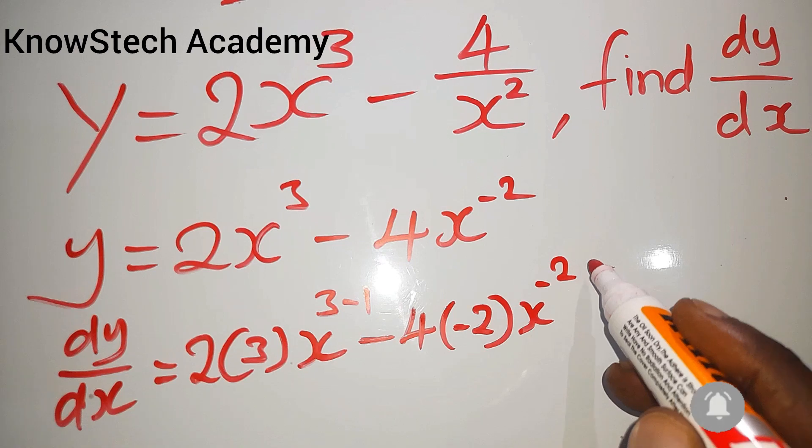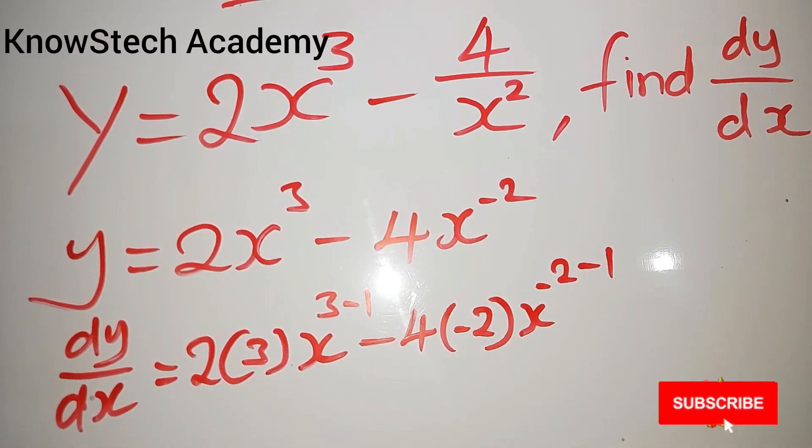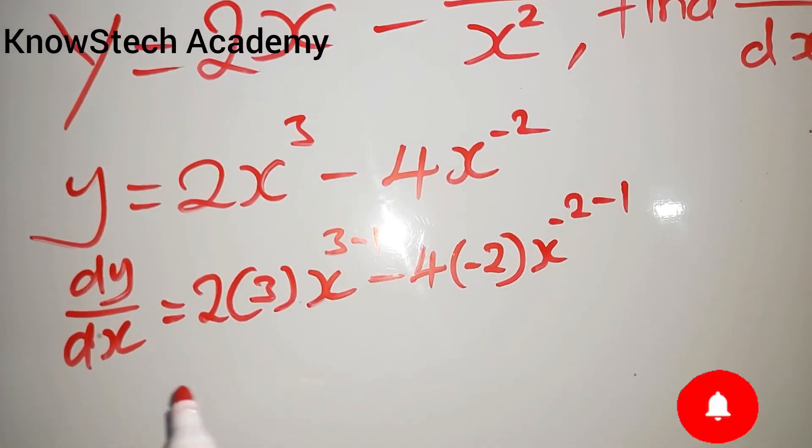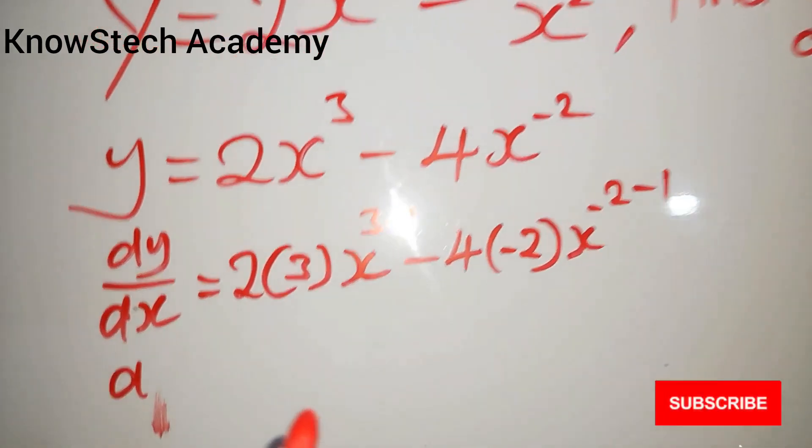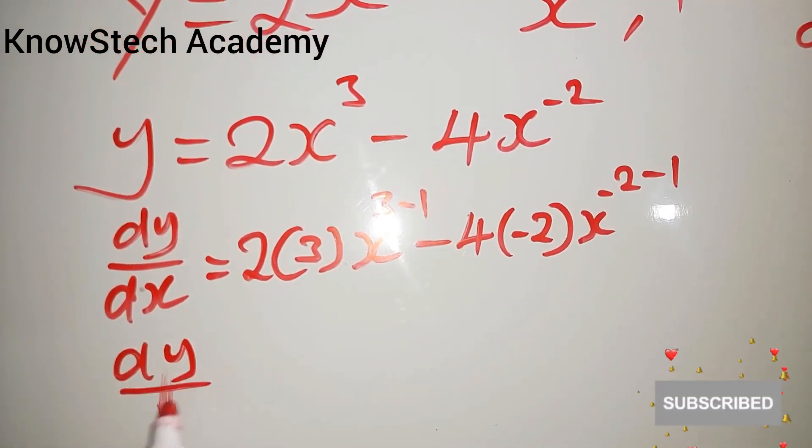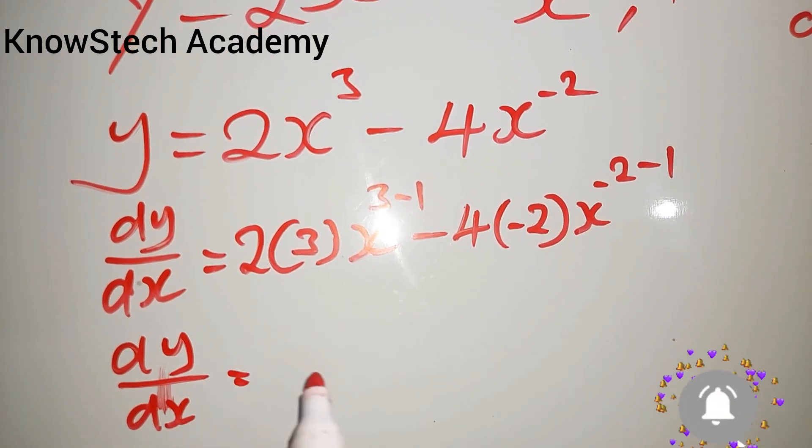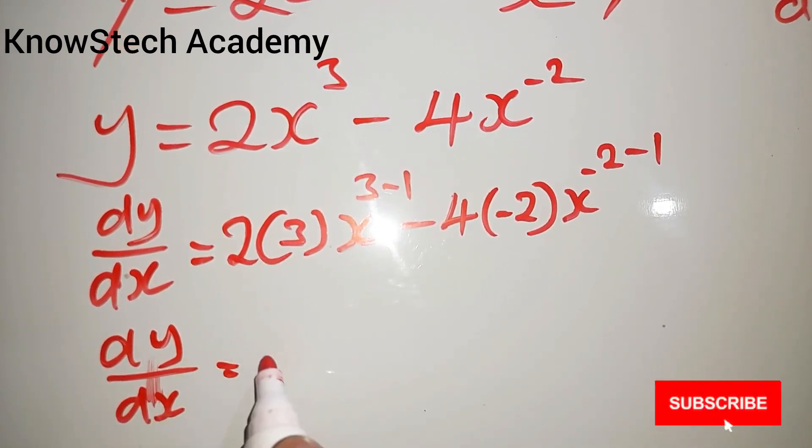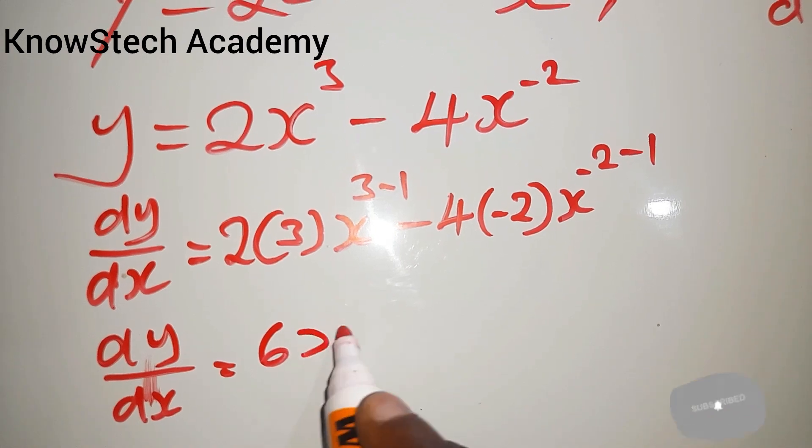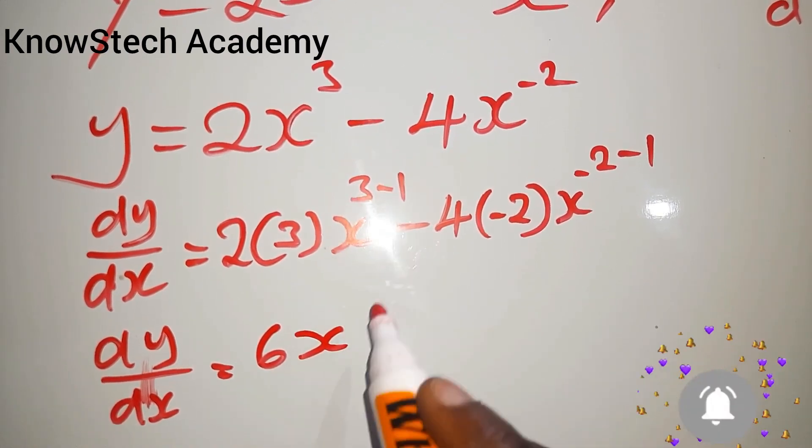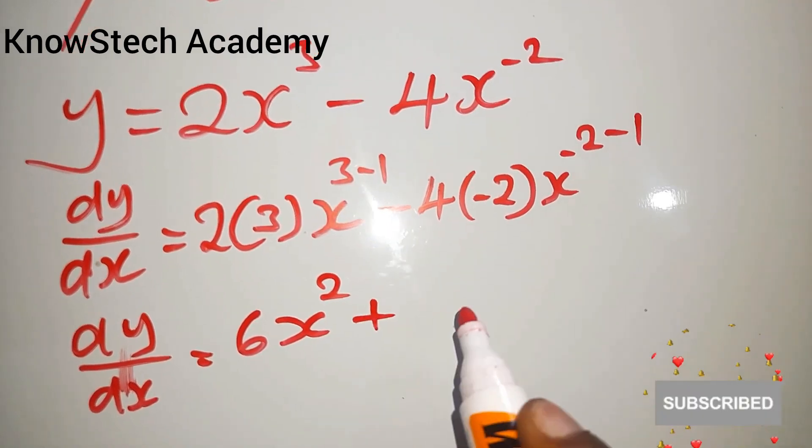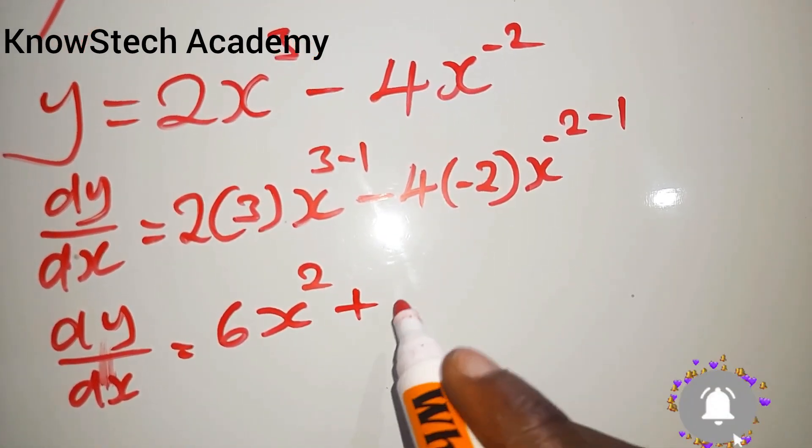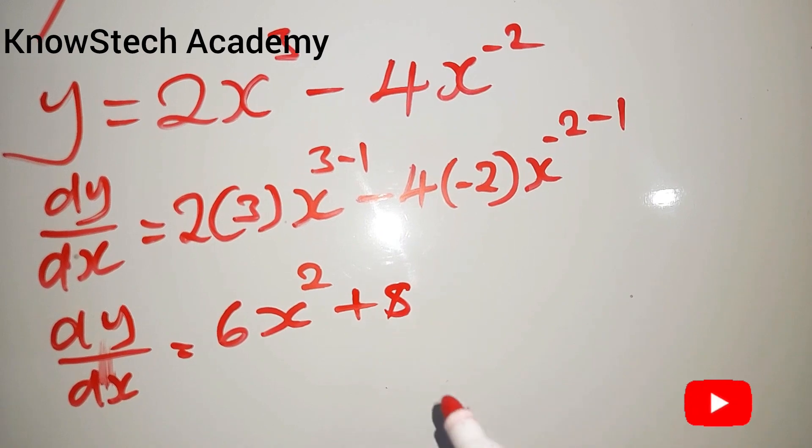Then dy/dx is equal to 2 times 3 is 6x to the power 3 minus 1. Dy/dx is equal to 6x to the power 2. Negative times negative is positive, 4 times 2 is simply 8.